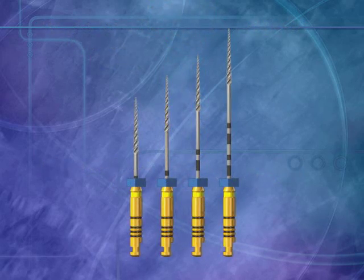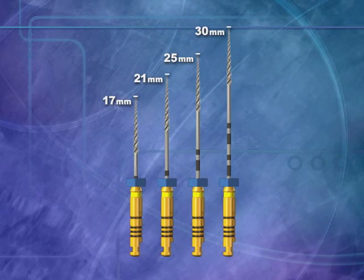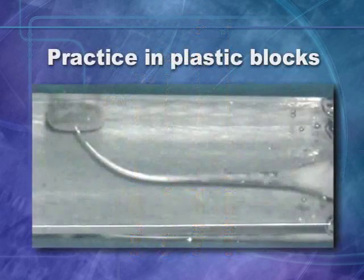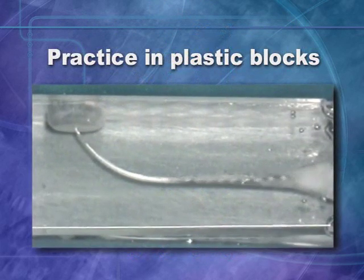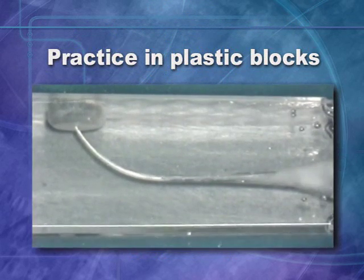The Profile GT instruments are available in 17, 21, 25, and 30 millimeter lengths to accommodate nearly any root canal case. As you would with any other new dental tool, the Profile GT instruments must be practiced with, first in plastic blocks and then in extracted teeth, before they are introduced into the practice.